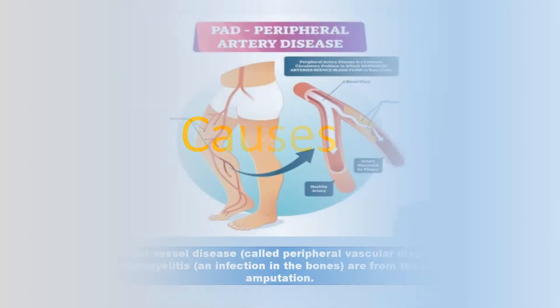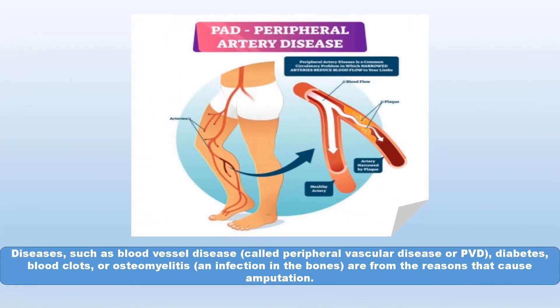Causes: Diseases such as blood vessel disease, called peripheral vascular disease or PVD, diabetes, blood clots, or osteomyelitis — an infection in the bones — are among the reasons that cause amputation.